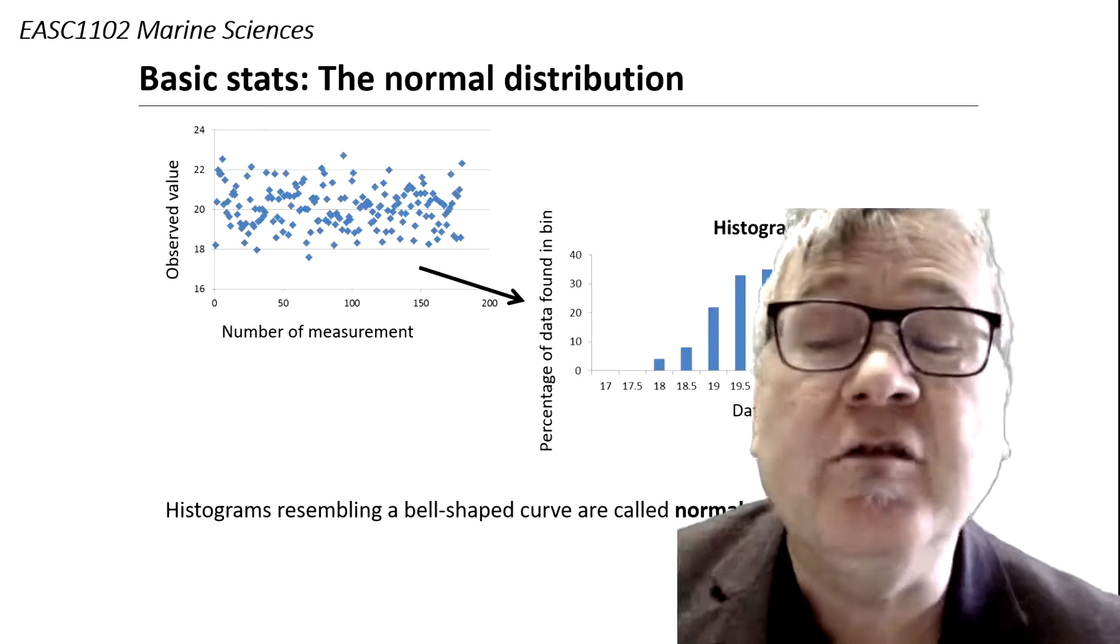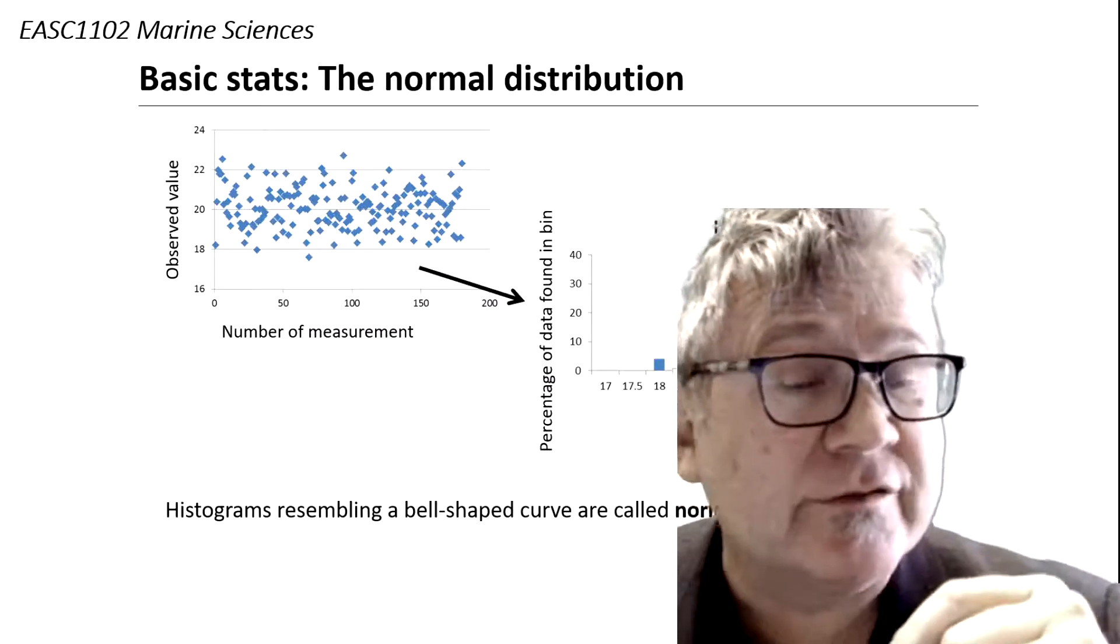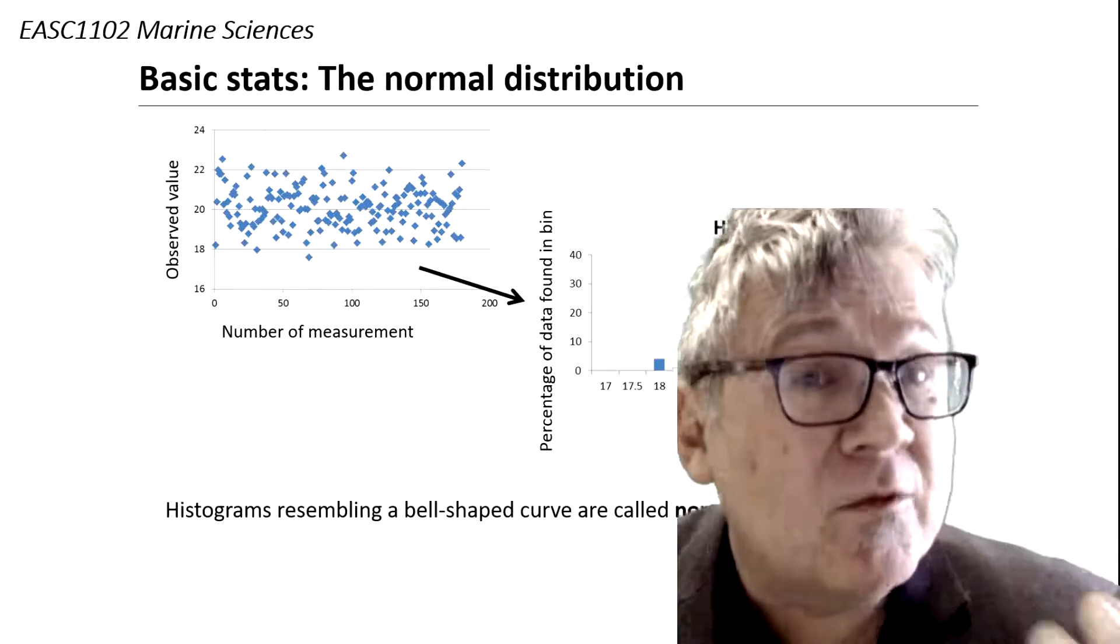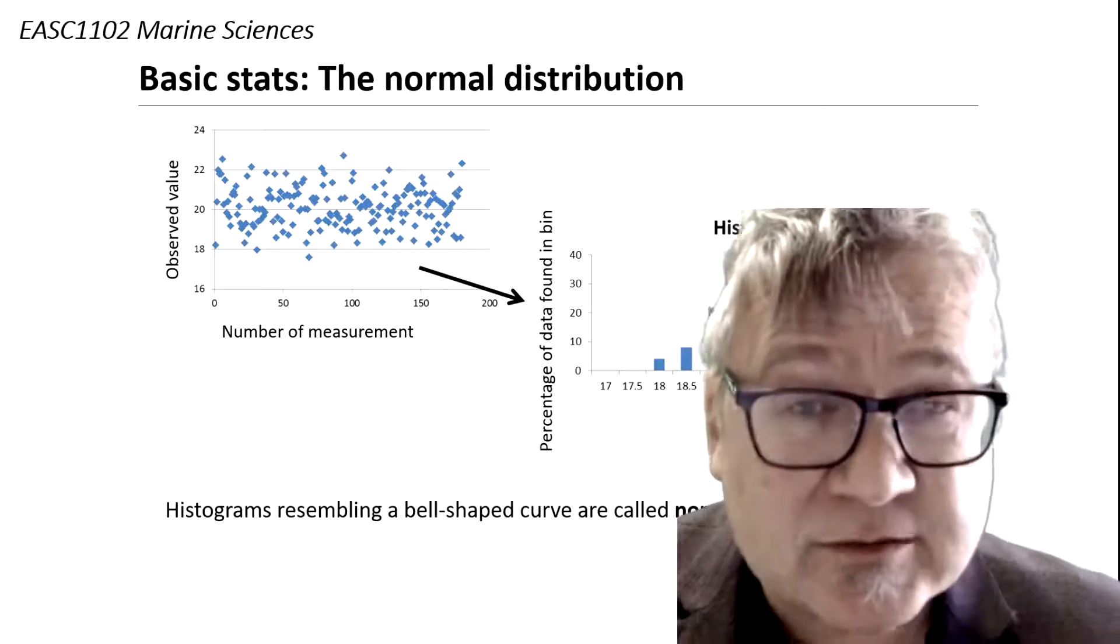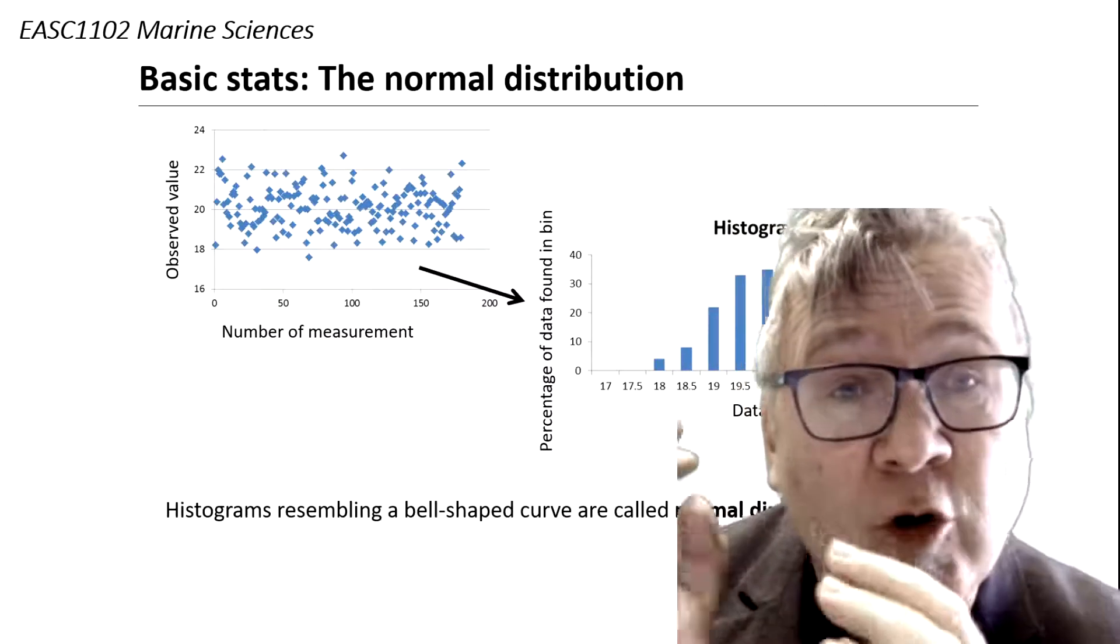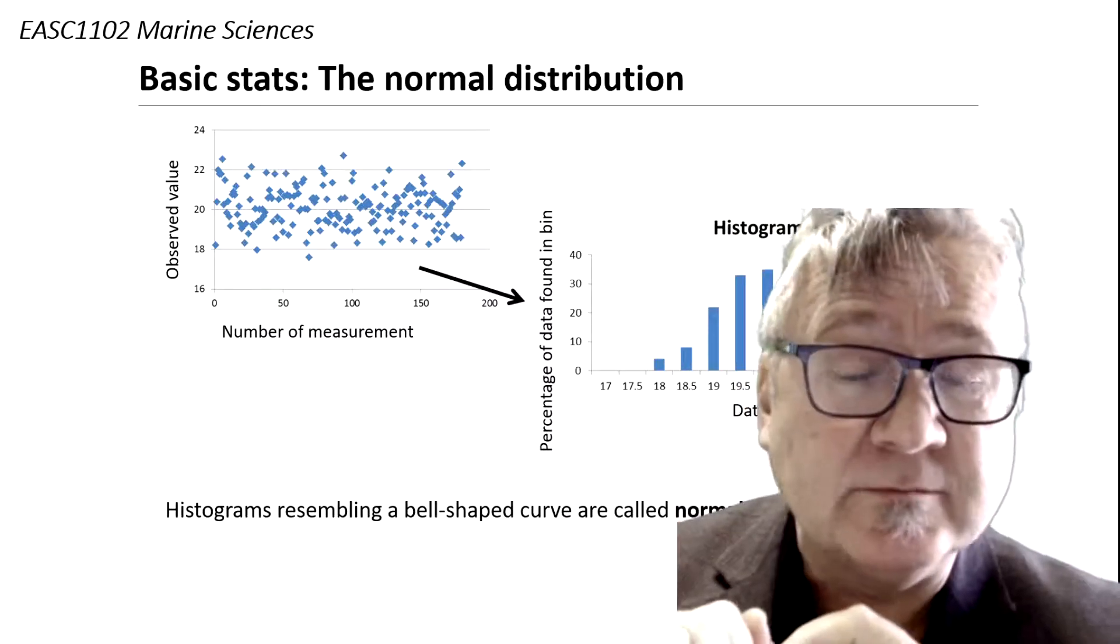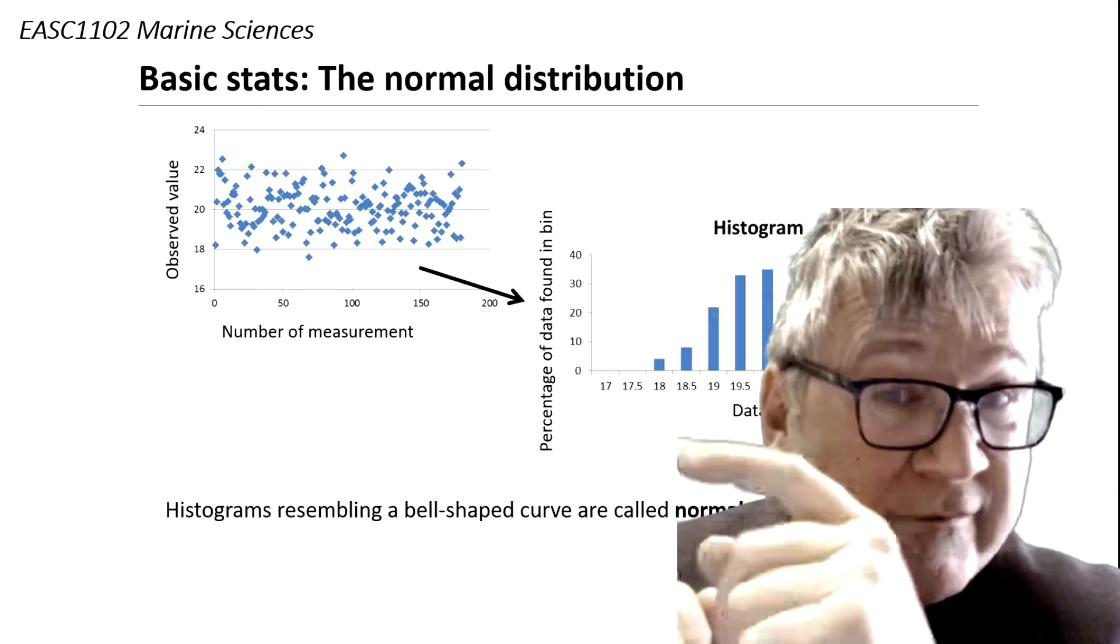And the observed value is shown and there are some fluctuations. There are some random errors and this is for a controlled experiment, so there are some variations.